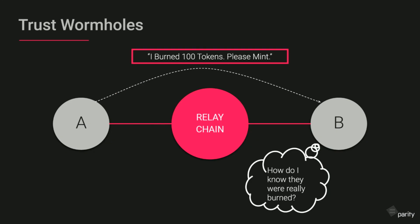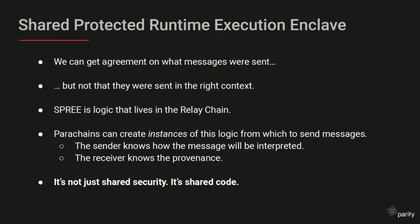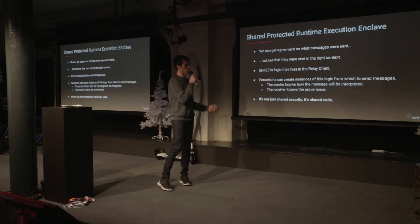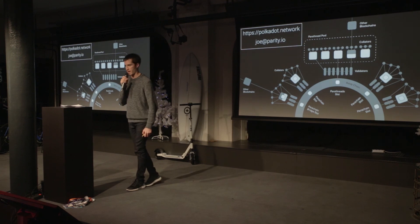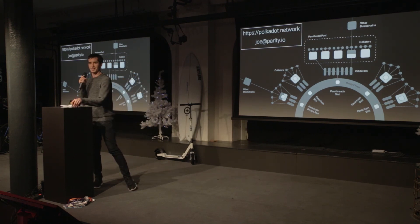It's almost like you add a bubble here that says SPREE A, and a bubble here that says SPREE B, and you just send the message between the SPREEs, and then the SPREEs communicate synchronously with their own chain. The sender of the message knows that this message will actually be interpreted the way he thinks it will be — if you're issuing a command to mint 100 tokens, it's actually going to get executed. The receiver is guaranteed the providence of the message. Polkadot has this concept of shared security, and with SPREE we have shared code — you can literally trust the code because you have the same copy of it. Thank you.